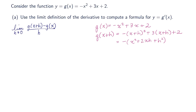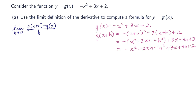Distributing the 3 gives plus 3x plus 3h plus 2. Now distributing the negative: negative x squared minus 2xh minus h squared plus 3x plus 3h plus 2. We have some like terms to look for, but actually there are none to combine yet, so that's as much as we can simplify.